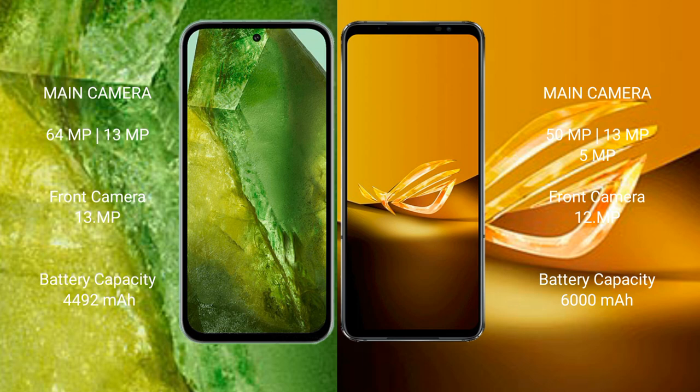The Google Pixel 8a has a 4492mAh battery with 30-watt fast charging support. The Asus ROG Phone 6D has a 6600mAh battery with 65-watt fast charging support.